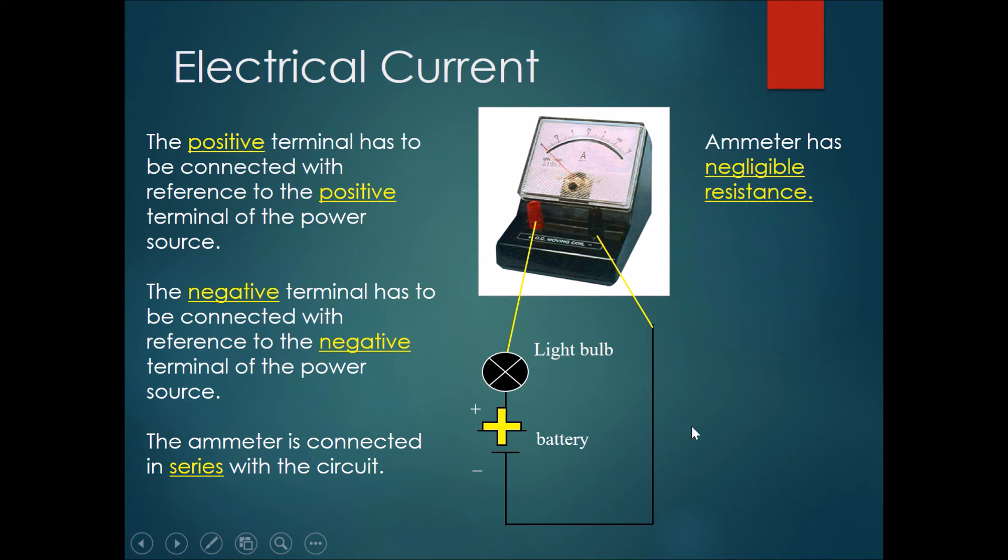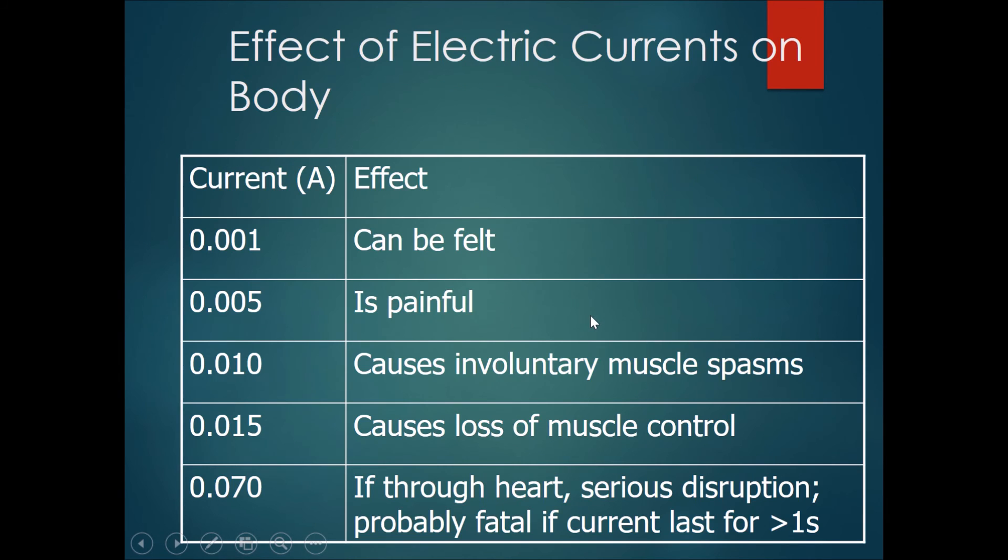The ammeter will have negligible resistance, so the conventional current represented by the cross would flow from the plus side upwards through the light bulb, through the ammeter, and back to the battery. Now we know that electron current actually flows from the negative side to the positive side, so the electron current will actually flow like this. Notice that they go through the ammeter.